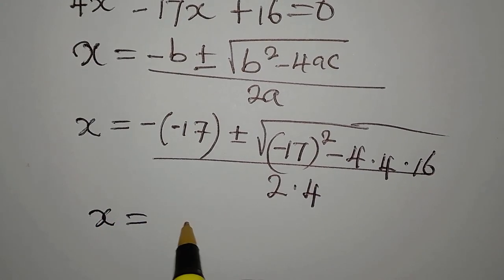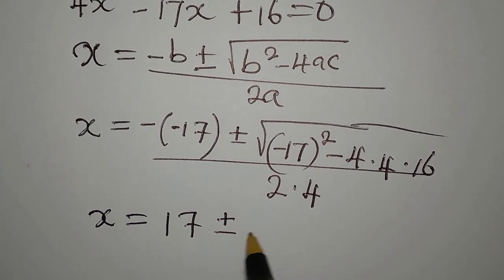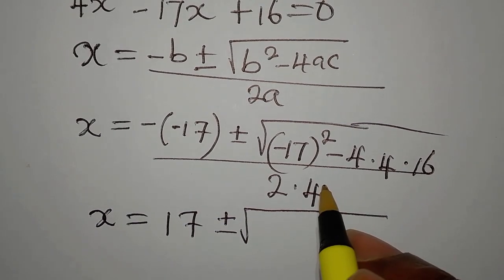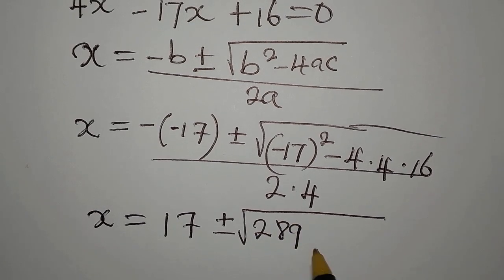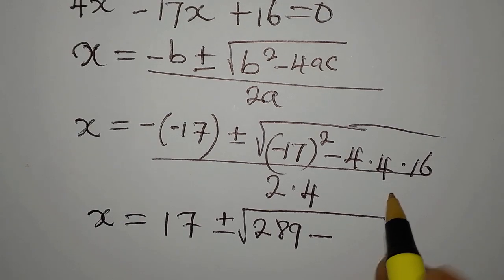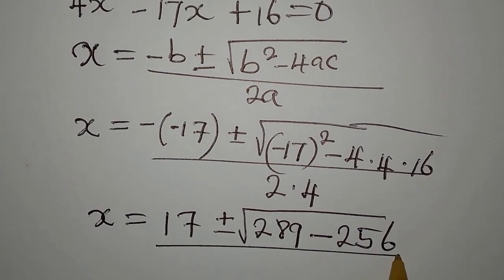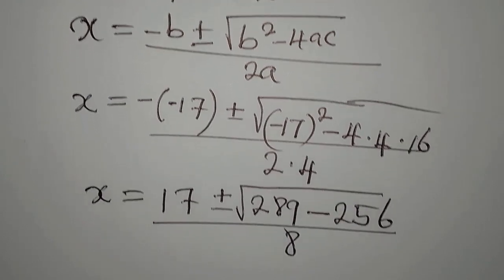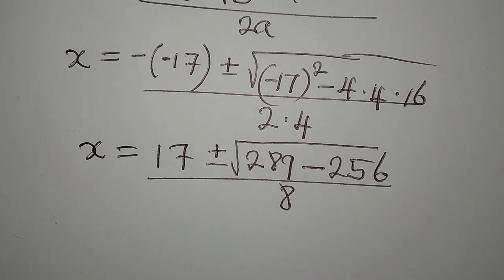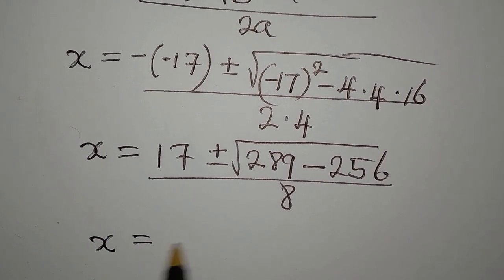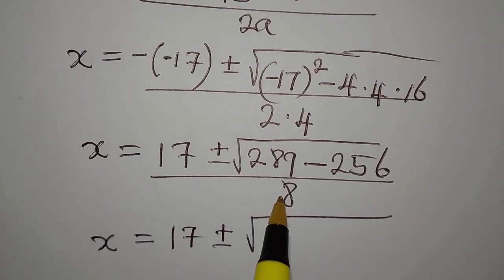Now x is 17, negative negative is positive, plus or minus square root of 289, then minus 16 times 16 is 256, divided by 8. So we have x to be 17 plus or minus square root of 289 minus 256 is 33, divided by 8.